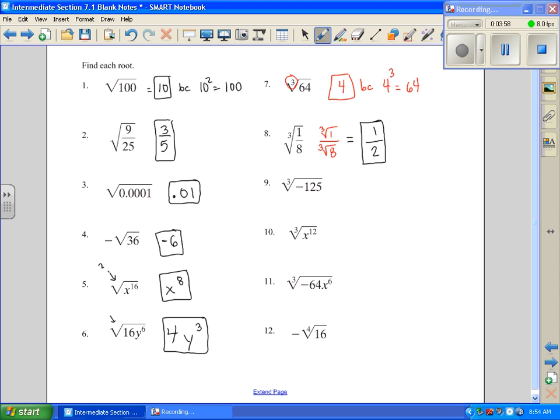Number nine, I can have negative here this time because this is an odd index. So it's just going to be negative 5. Negative 5 to the third power equals negative 125.